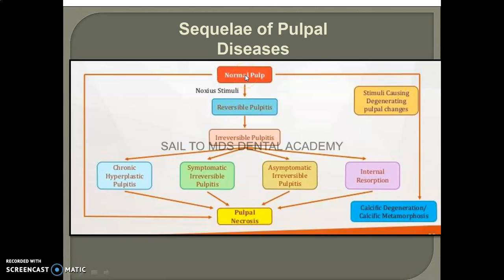Remember the sequelae of pulpal disorder: when the pulp is normal and noxious stimuli are applied, it converts into reversible pulpitis. If untreated, it converts into irreversible pulpitis, which can progress to chronic hyperplastic pulpitis (pulp polyp), symptomatic irreversible pulpitis, asymptomatic irreversible pulpitis, and internal resorption. The AAE has recommended replacing the terms acute and chronic pulpitis with symptomatic and asymptomatic. If untreated, the pulp undergoes necrosis.